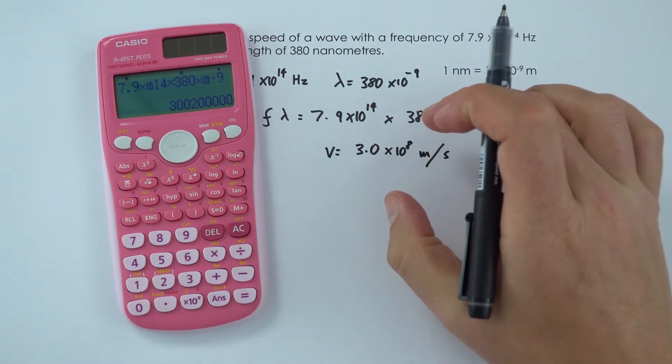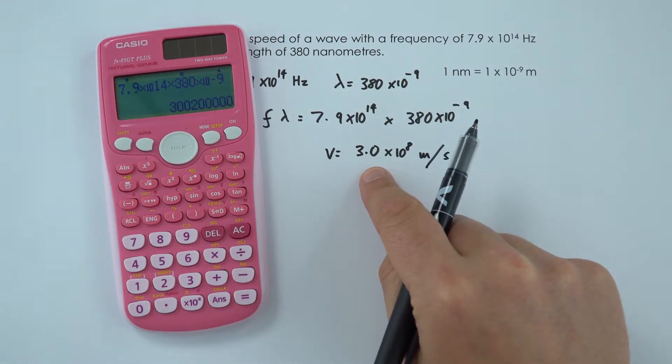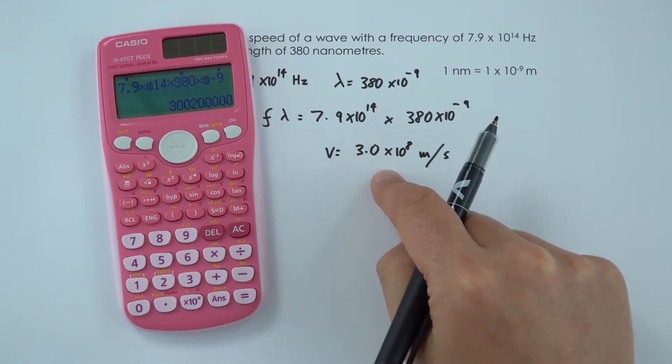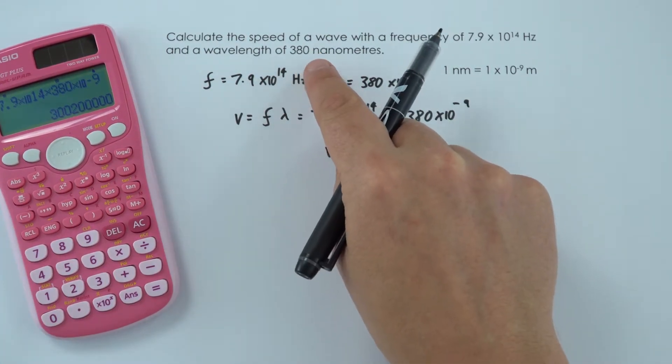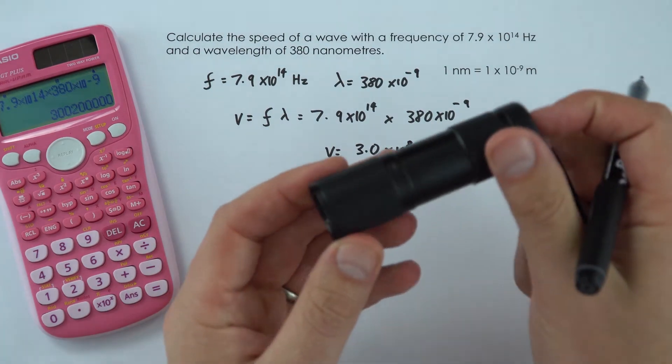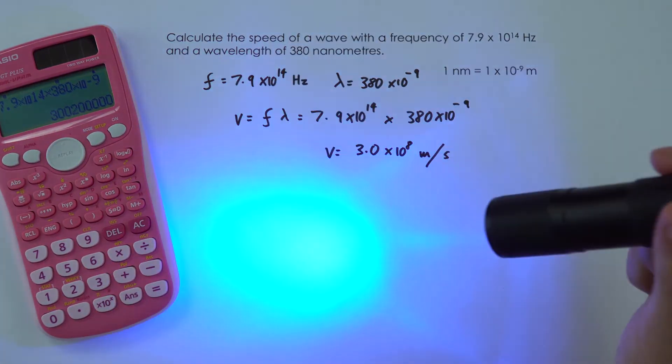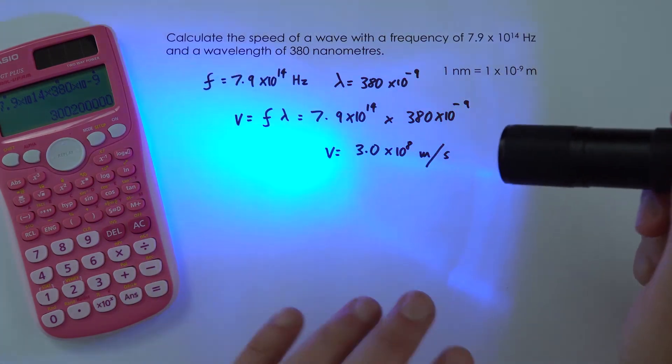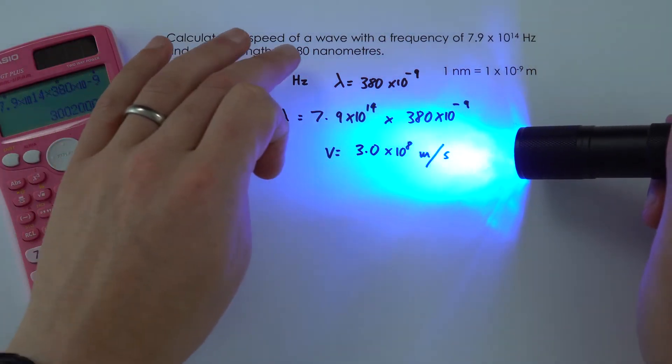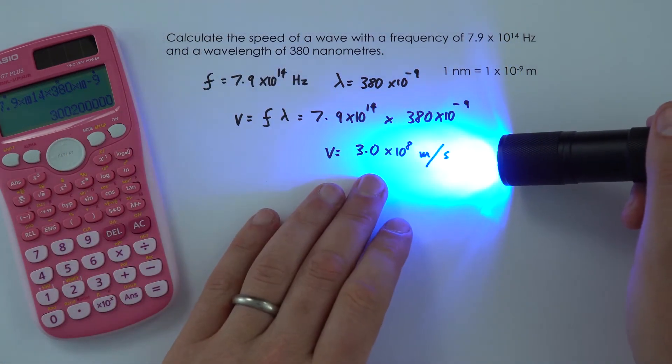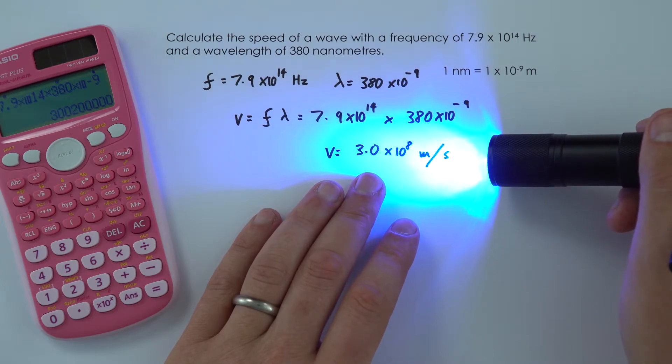In actual fact, this number should be quite familiar to you by now. This is the speed of light, or the speed of electromagnetic waves. In actual fact, something which has a wavelength of 380 nanometres, that's just into the ultraviolet range. So here I've got an ultraviolet torch, it causes certain things to fluoresce, and so in this particular case we've got ultraviolet light, which travels at the speed of all electromagnetic waves, which is 3 times 10 to the 8 metres per second.